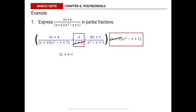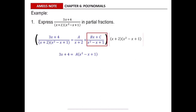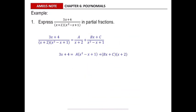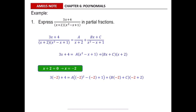Multiplying the last fraction cancels the x squared minus x plus 1 and leaves Bx plus C multiplied by x plus 2. There is only one value we can substitute, which comes from the factor x plus 2, giving x equals negative 2. Substituting x equals negative 2 into the equation cancels the Bx plus C term, and from here we can get the value of A.